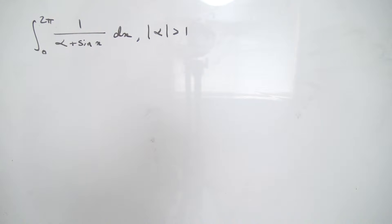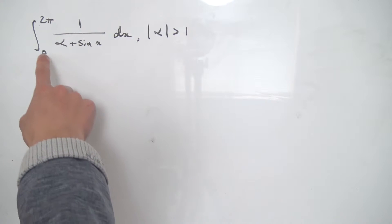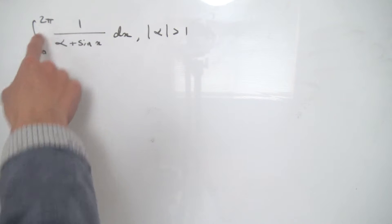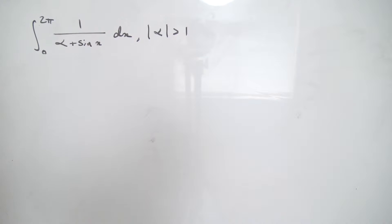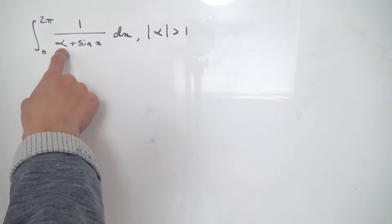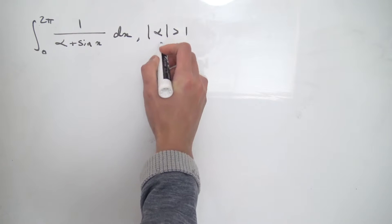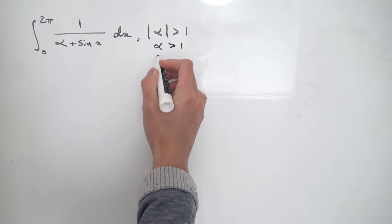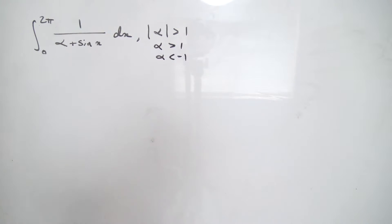Welcome back everybody. Today we're going to be using complex analysis to evaluate this trigonometric integral. This is a bit of a weird application of complex analysis because usually we're dealing with improper integrals, but here we're dealing with the interval from 0 to 2π. Our parameter alpha has a modulus greater than 1, so either alpha is greater than 1 or alpha is less than minus 1.